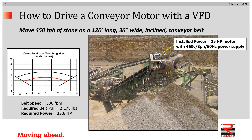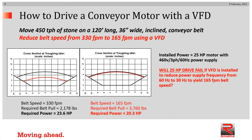Let's take a real-world example. Here we have a conveyor originally designed to move 450 tons per hour of stone. The conveyor is 120 feet long, inclined, 36 inches wide, and has a belt speed of 330 feet per minute. On the left you can see a cross-sectional diagram showing it's not completely full — the red line indicates what 450 tons per hour looks like on a 36-inch wide belt at 330 feet per minute. The required belt pull is 2,178 pounds and the required power is 23.6 horsepower, so the conveyor was outfitted with a 25 horsepower AC motor designed to run on 460 volt three-phase 60 hertz.